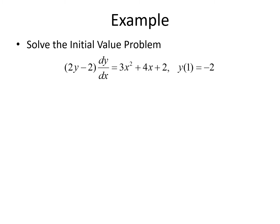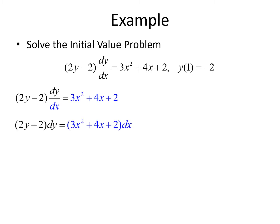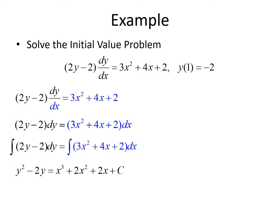Let's look at one final example — an initial value problem. We have 2y minus 2 times dy/dx equals 3x squared plus 4x plus 2, with initial condition y of 1 equals negative 2. First, we separate our variables by multiplying dx to the right hand side: 2y minus 2 dy equals 3x squared plus 4x plus 2 dx. Integrating both sides gives y squared minus 2y on the left equals x cubed plus 2x squared plus 2x plus c on the right.